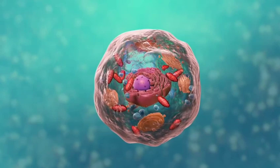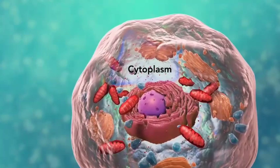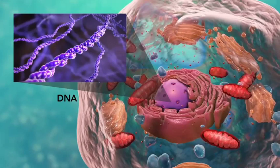All cells have a cell membrane, which separates the inside of the cell from its environment, cytoplasm, which is a jelly-like fluid, and DNA, which is the cell's genetic material.